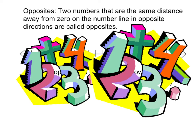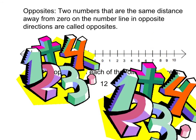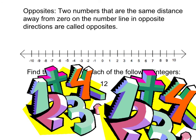Now I would like to give you the definition of opposites. Opposites are two numbers that are the same distance away from 0 on the number line in opposite directions. Please take a moment to pause the video and write down the definition of opposites. Now let's use the number line to find some opposite numbers. Let's find the opposite of 5. Five is 5 units to the right of 0, so to find the opposite of 5 we go 5 units to the left of 0, and we land on negative 5. Therefore, negative 5 is the opposite of 5.